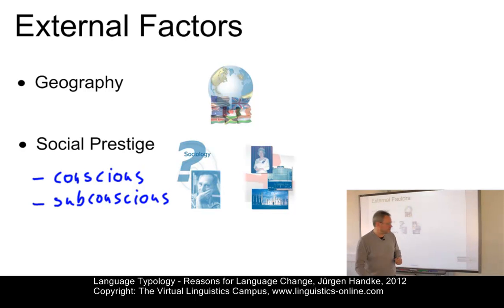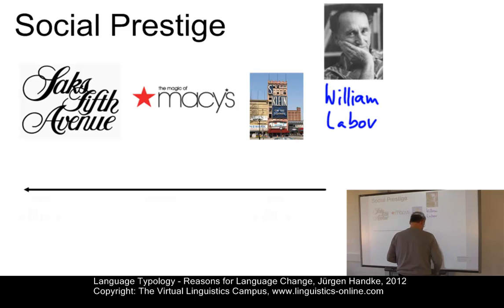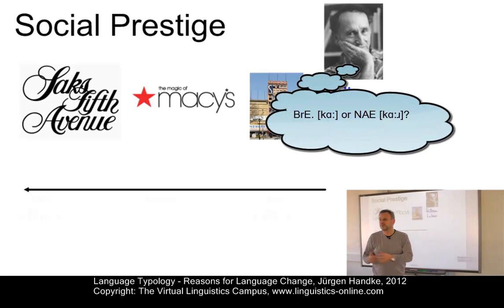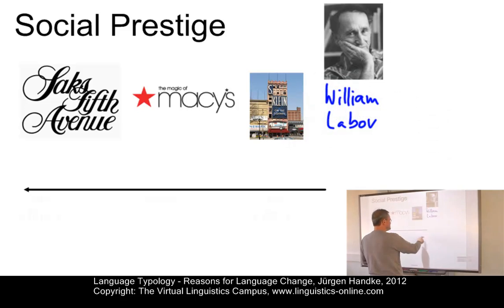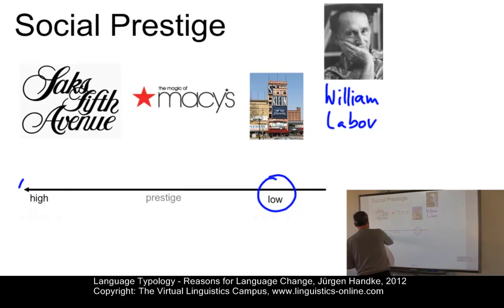William Labov produced a famous example of such a conscious change. Here is William Labov, a leading sociolinguist of our time. What he did was select three storehouses in New York City to find out whether people produce the post-vocalic R in their speech or not — do they say something like 'cah', the British variant, or do they prefer 'car', the North American variant? He selected storehouses different in terms of prestige: S. Klein is relatively low in prestige, Saks is ranked relatively high, with Macy's in the middle.